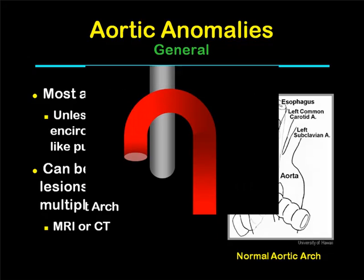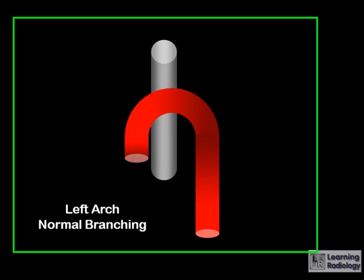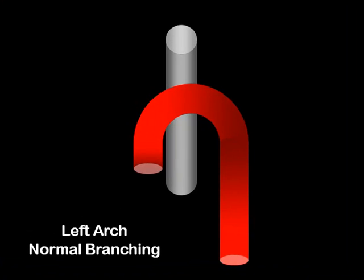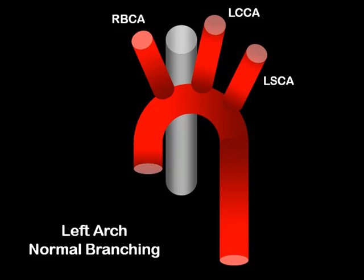Just as a reminder, this is the normal branching of a left aortic arch. The first branch is the right brachiocephalic artery. The second major branch is the left common carotid artery. And the third branch is the left subclavian artery.